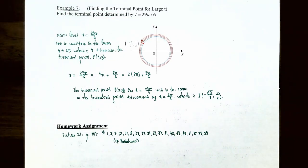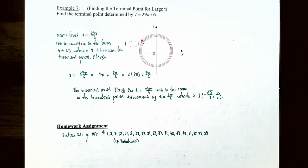In summary, this video covered how to determine whether a point is on the unit circle, how to find terminal points given a real number t, how to find reference numbers, and how to use reference numbers to find terminal points. In the next video, we'll define the six trigonometric functions of real numbers.